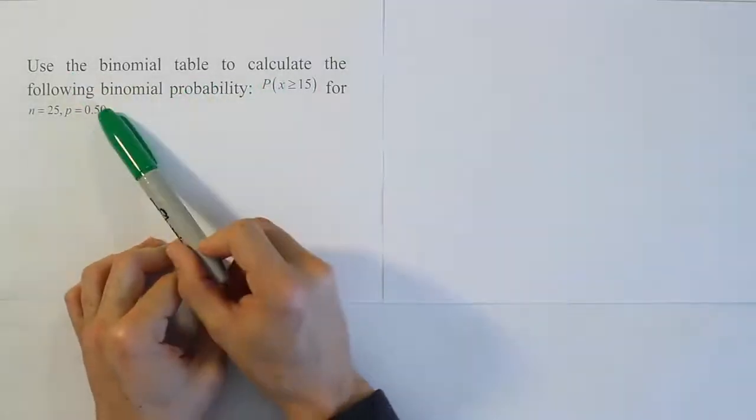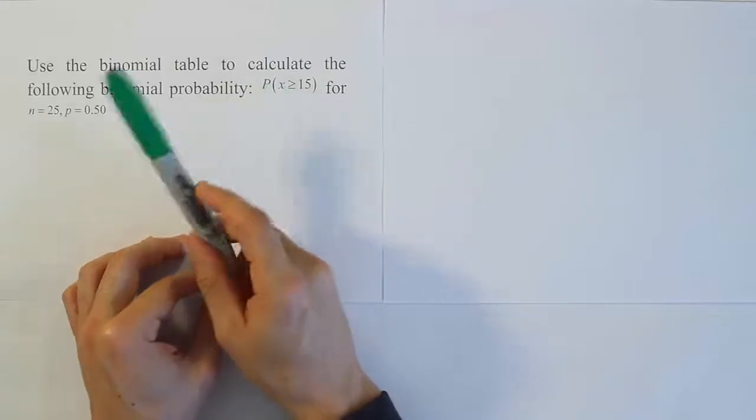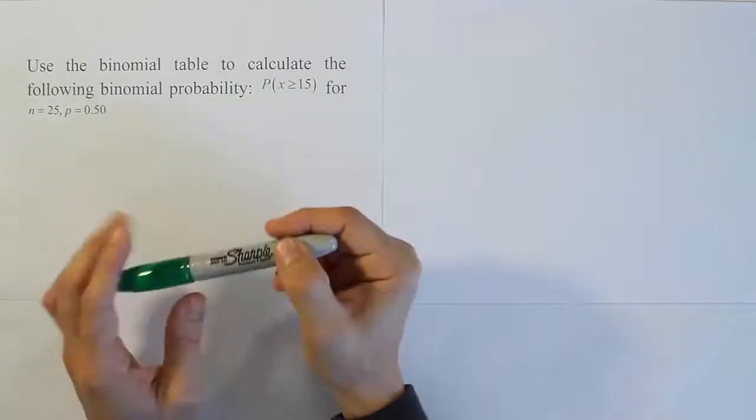Use a binomial table to calculate the following binomial probability: The probability x is greater than or equal to 15 for n equals 25 and p equals 0.5.